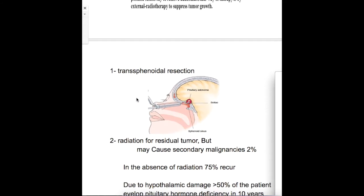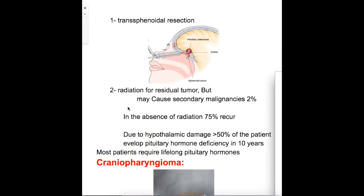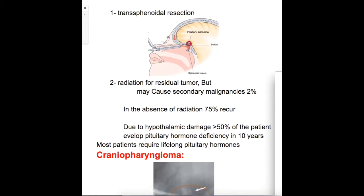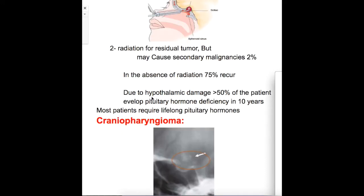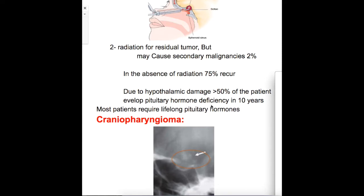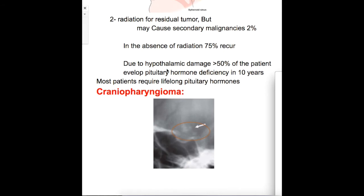For larger tumors, trans-sphenoidal resection is the treatment of choice. Radiation is done for residual tumor but may cause secondary malignancy in 2% of patients; without radiation, 75% of cases may recur. The disadvantage of radiation is that more than 50% of patients develop pituitary hormone deficiency within 10 years, so most patients require lifelong pituitary hormone replacement.